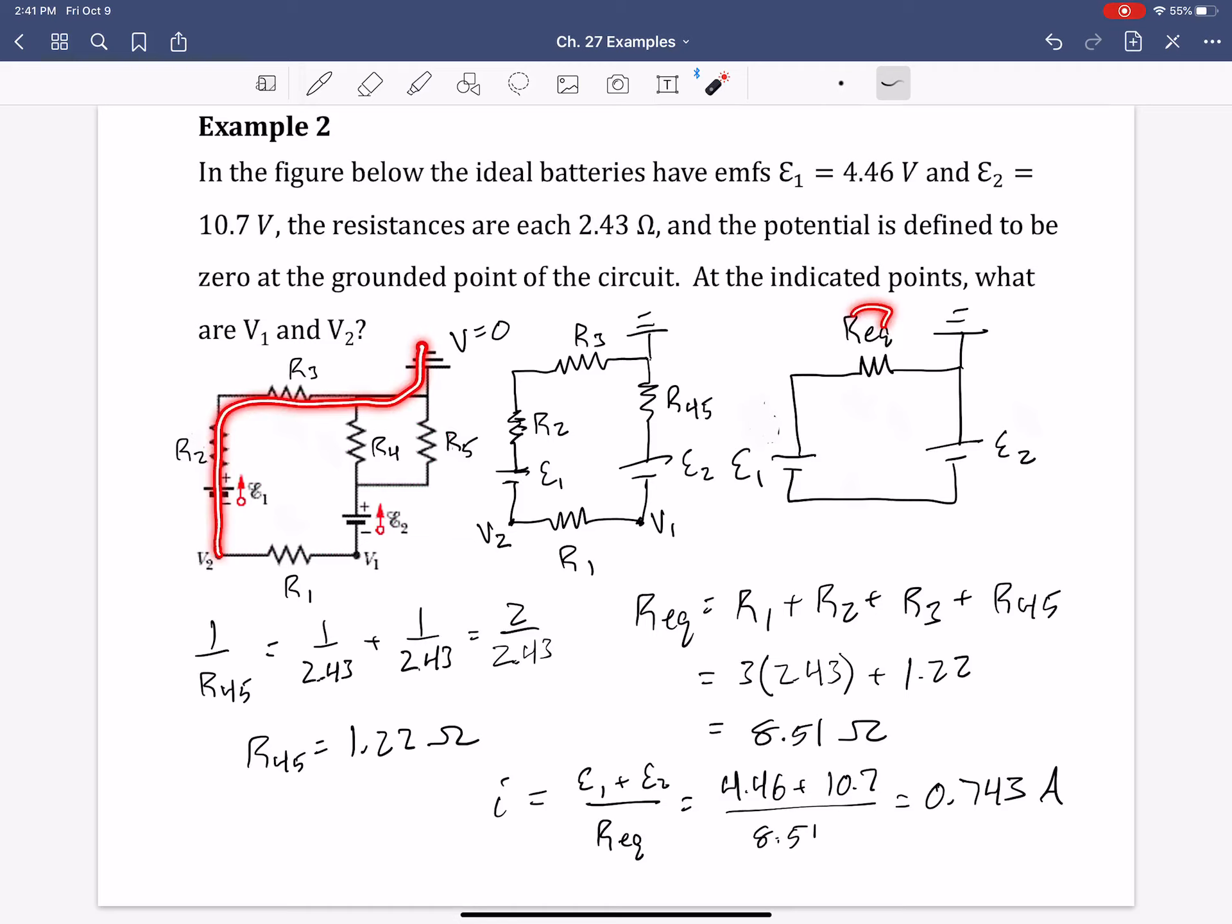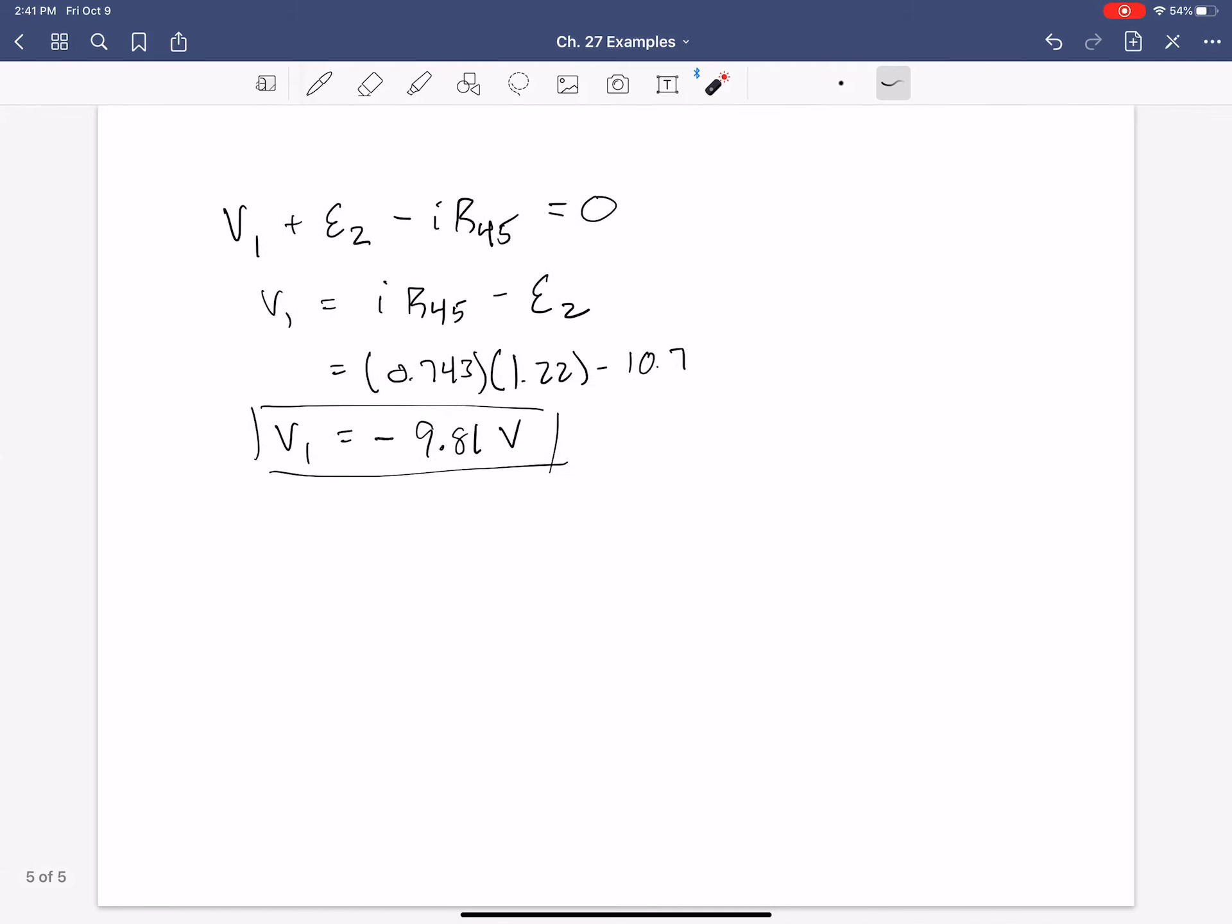We have to go here, right? Because this equivalent resistance is not the same value as simply R2 combined with R3. So, we have to go V2, increase voltage across E1, then decrease the voltage across R2, decrease the voltage across R3, and then straight to zero. So, our equation should be V2 plus E1.